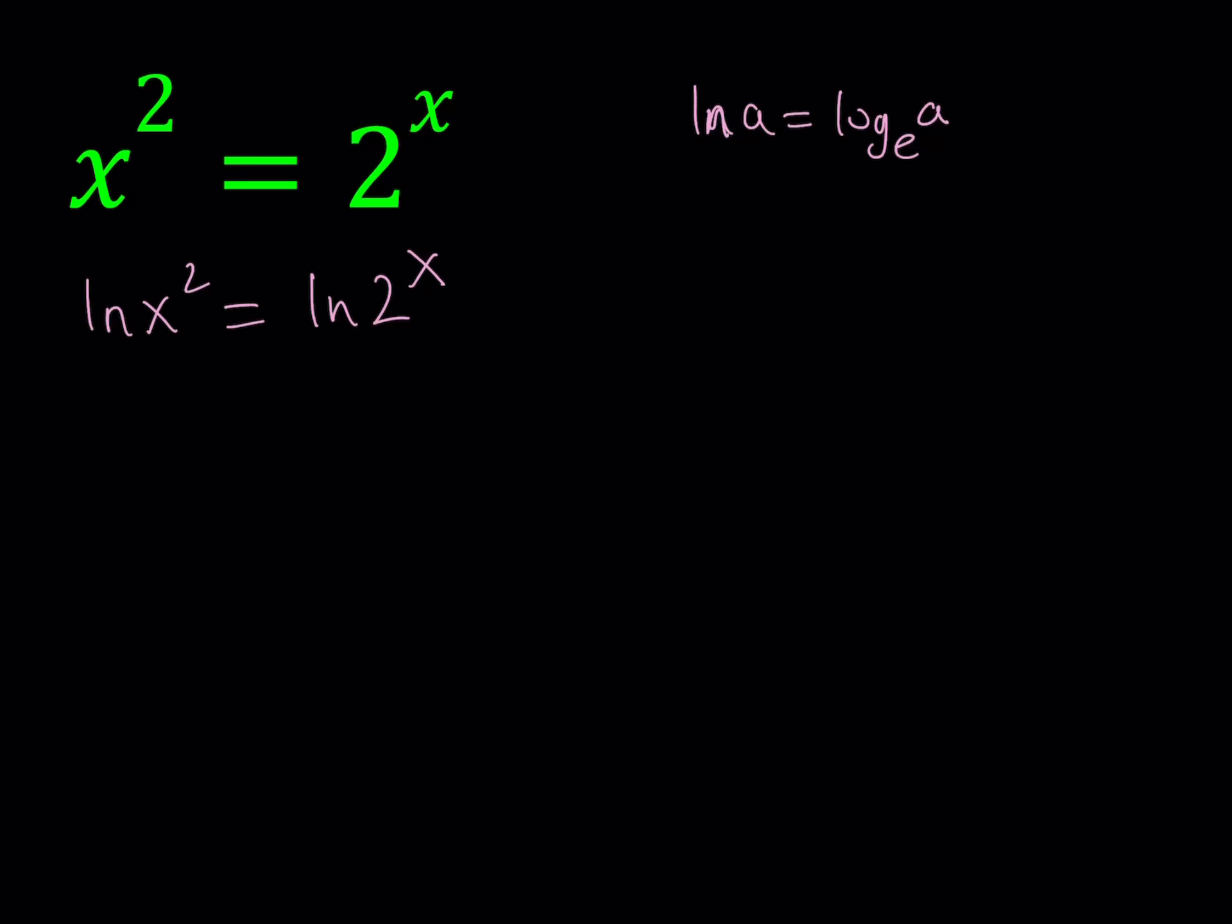We get ln x squared equals ln 2 to the power x. So we can move the 2 to the front, 2 ln x, that's how we got rid of the exponent, and this becomes x ln 2. Obviously, again at this point, you may guess and check your solution and that's fine because guess and check is a problem solving strategy, whether you like it or not.